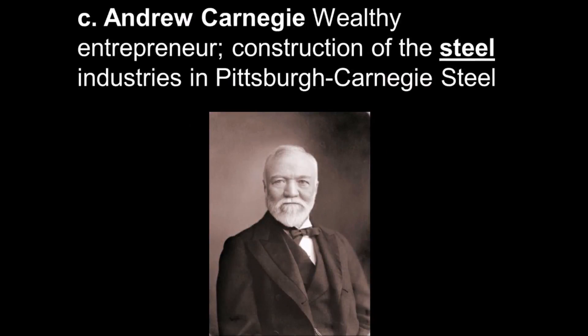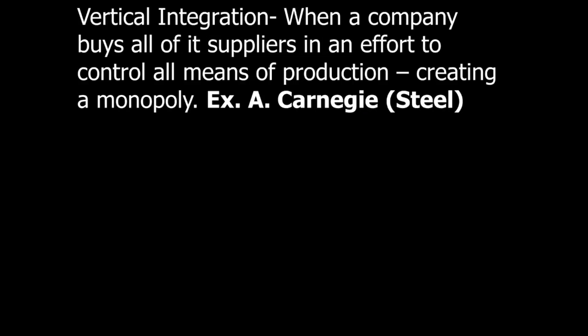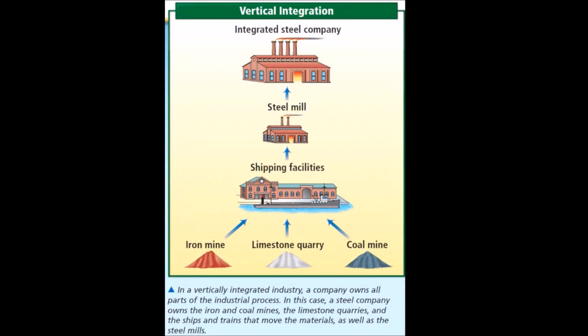Andrew Carnegie's big claim to fame was steel, and the reason Pittsburgh is home of the Steelers is because of Andrew Carnegie and U.S. Steel. He believed in what's called vertical integration — when a company buys all its suppliers in an effort to control the means of production, basically creating a monopoly. He bought the iron, limestone, and coal needed to make high-quality steel, plus the shipping facilities, and then the steel mill itself. He owned everything from the bottom up, and that's how Carnegie was able to get his steel monopoly. It's very important for this course to know vertical integration compared to horizontal integration, which we'll talk about a little later.